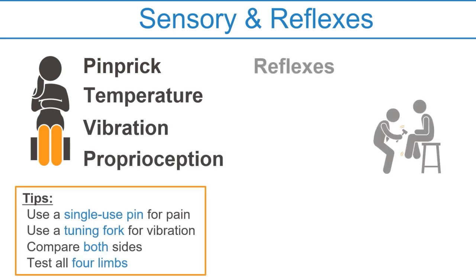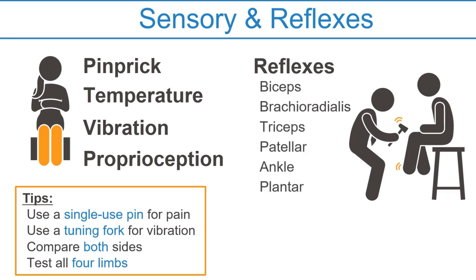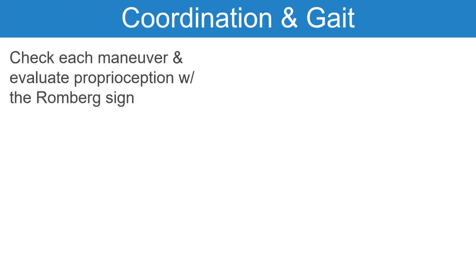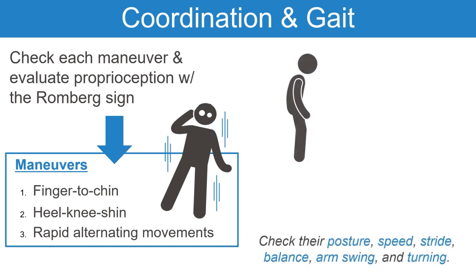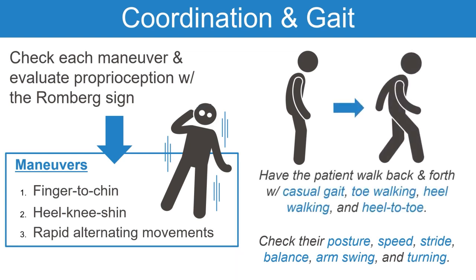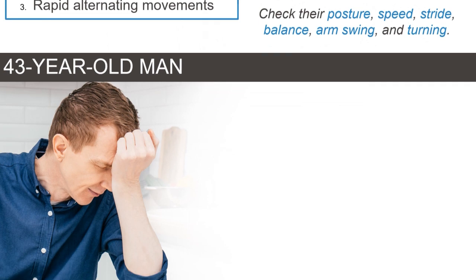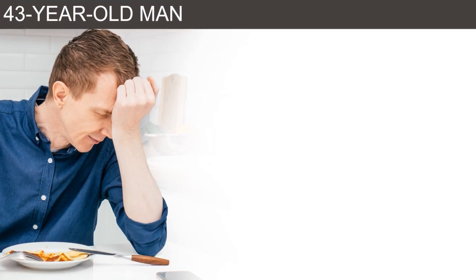Move on to assess the reflexes; ideally also evaluate for clonus. For coordination, check each specific maneuver and evaluate coordination and proprioception with the Romberg sign. To end, assess the patient's stance and check their gait. This exam can be tailored to the patient's presentation and you can perform additional tests if needed.